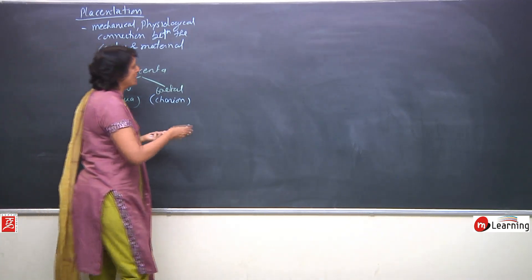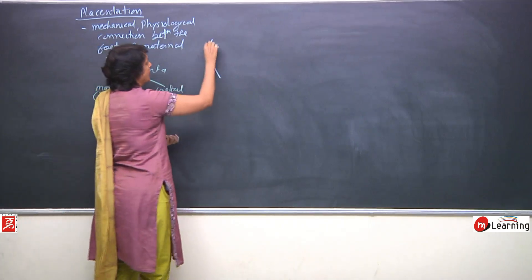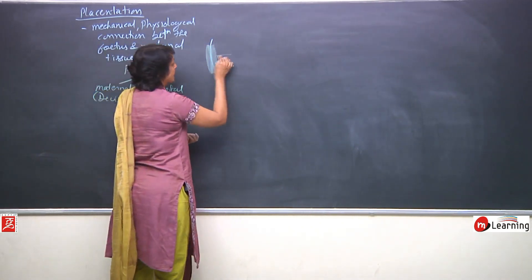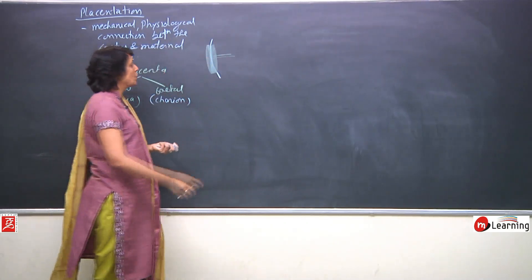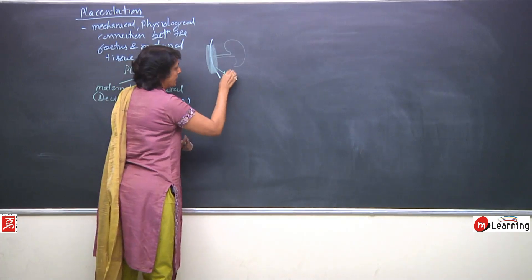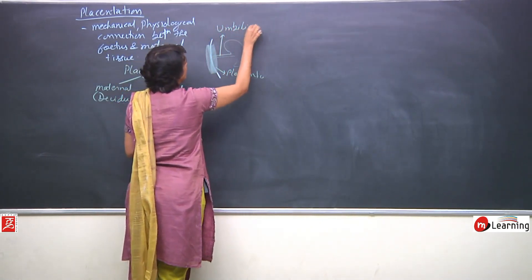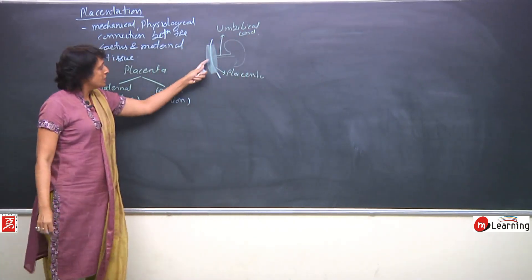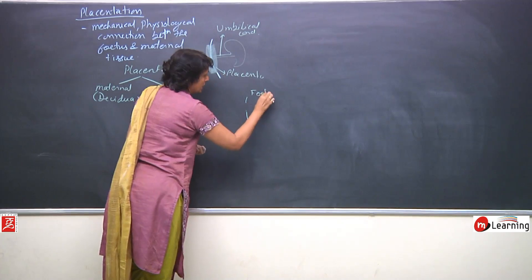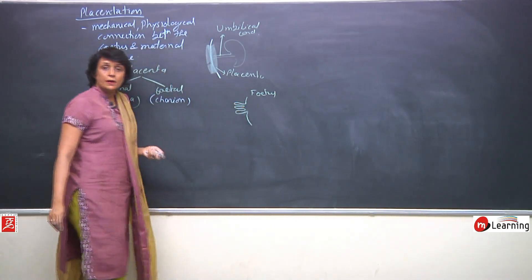How exactly does this formation take place? Suppose this is the endometrial lining. In this endometrial lining, a disc-like tissue is formed which is the placenta, and between the placenta and the fetus there is a connection known as the umbilical cord. From the fetal body, chorionic villi arise and these chorionic villi are formed.